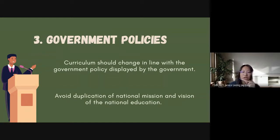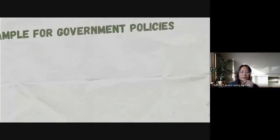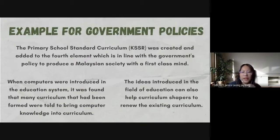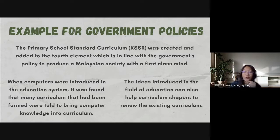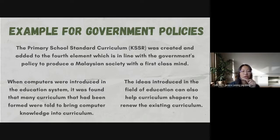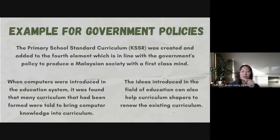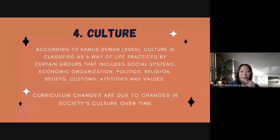Thirdly, government policies. Curriculum should change in line with the government policies set by the government, and this is to avoid undermining the application of the national mission and vision of national education. The Primary School Standard Curriculum, KSSR, was created and added a fourth element in line with the government's policy to produce a Malaysian society with a first-class mind. This is one of the reasons why KBSR was changed to KSSR. Another example is when computers were introduced in the education system — many curricula were directed to bring computer knowledge into the curriculum, and ideas introduced in the field of education can help curriculum shapers renew the existing curriculum.